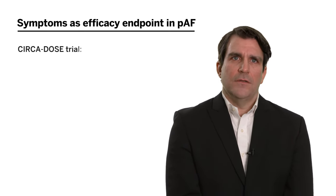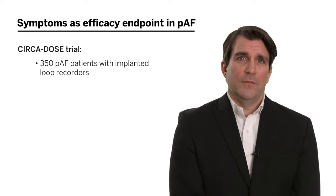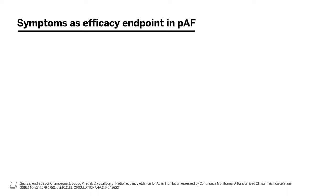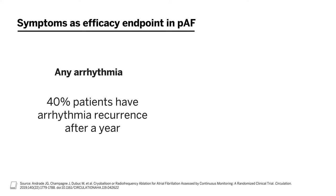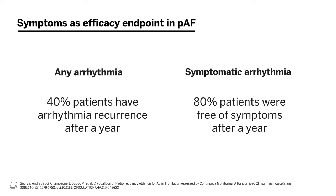In the CIRCA-DOSE trial, about 350 paroxysmal AFib patients with implanted loop recorders were randomized to different types of ablation. By the implanted loop recorder, if you used any arrhythmia recurrence as an efficacy endpoint, about 40 percent of patients had an arrhythmia recurrence after a year. However, if you went by symptoms — which is what these patients had from their paroxysmal AFib — then about 80 percent of patients were free of symptoms after a year.